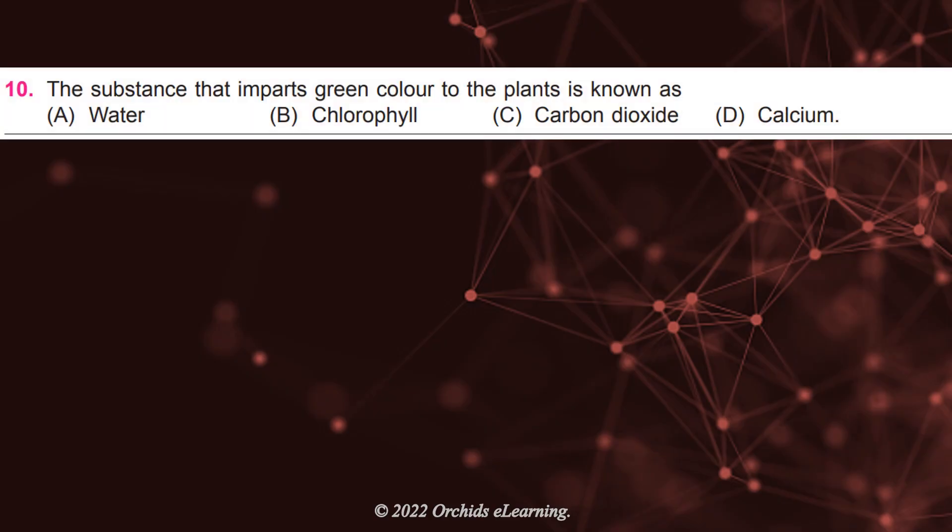The substance that imparts green color to the plants is known as: Answer: B, Chlorophyll.